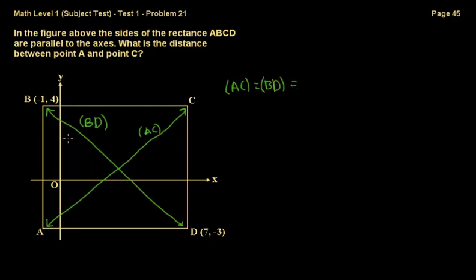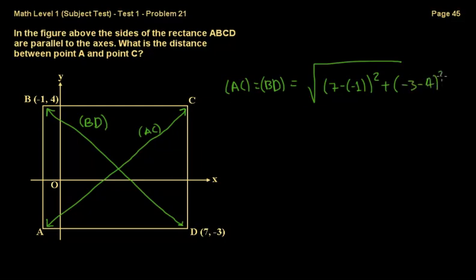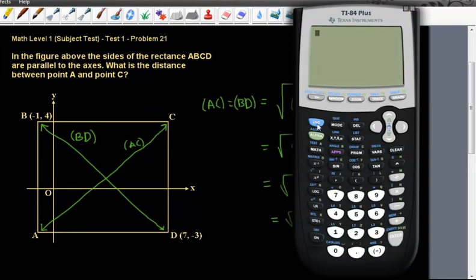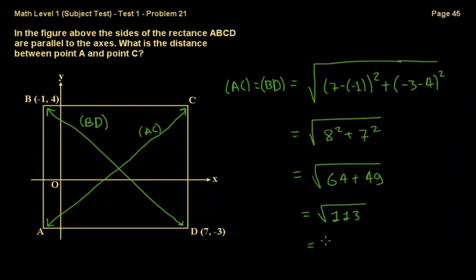Using the distance formula: BD equals the square root of (7 minus negative 1) squared plus (negative 3 minus 4) squared, which equals the square root of 8 squared plus 7 squared. That is the square root of 64 plus 49, equal to the square root of 113. Using a calculator, the square root of 113 is approximately 10.6, so the correct answer is D.